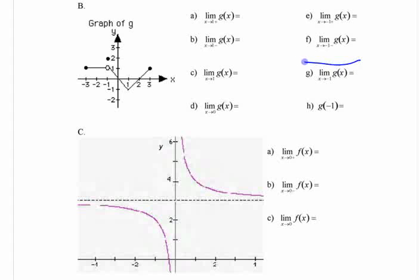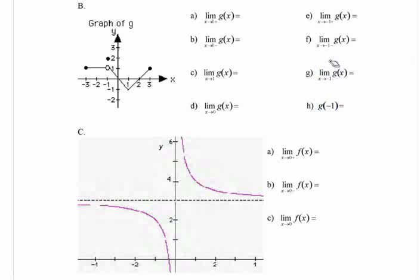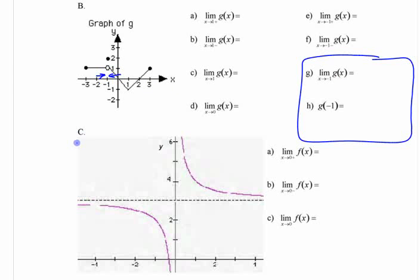The last thing here is to compare what the function is actually defined as at a point and what the limit is as you approach that x value, because these don't necessarily have to be the same. As you approach negative 1 from either side, what does it look like the function is headed for? From this side and this side, it looks like it's headed for 1 — that's the y value.